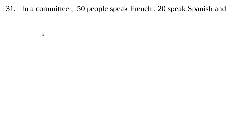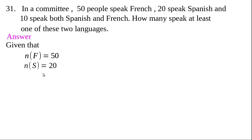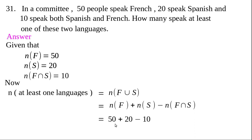Question 31: In a committee, 50 people speak French, 20 speak Spanish, and 10 speak both. Find the number who speak at least one of the two languages. 'At least one' represents union. Using n(F∪S) = n(F) + n(S) - n(F∩S) = 50 + 20 - 10 = 60. The answer is 60.